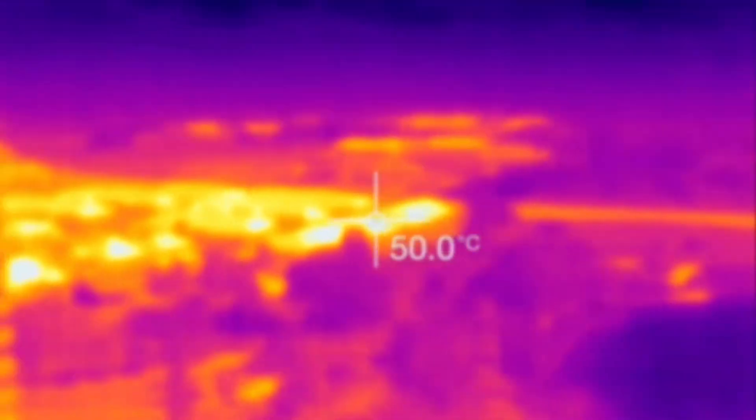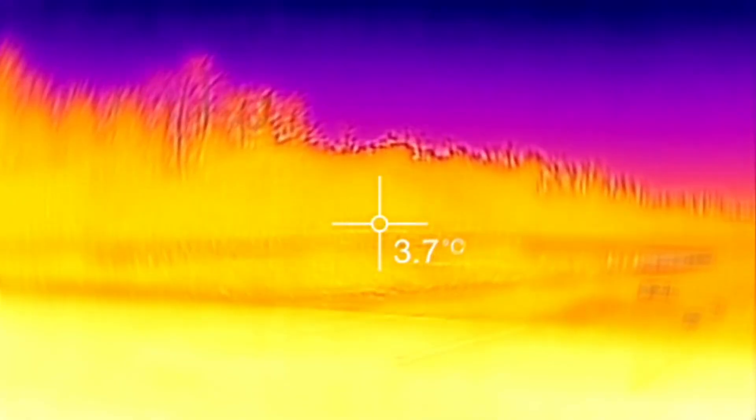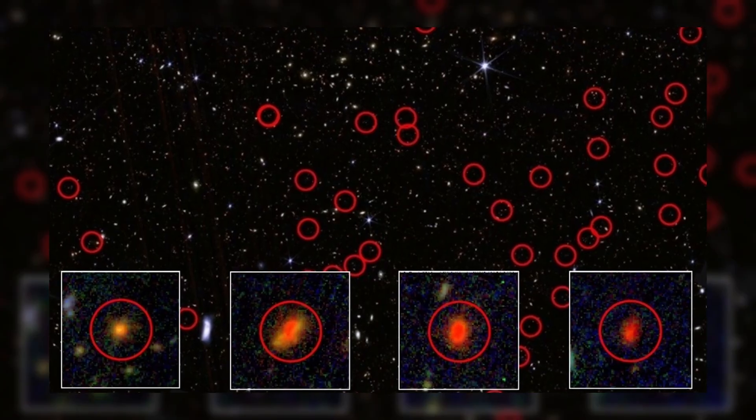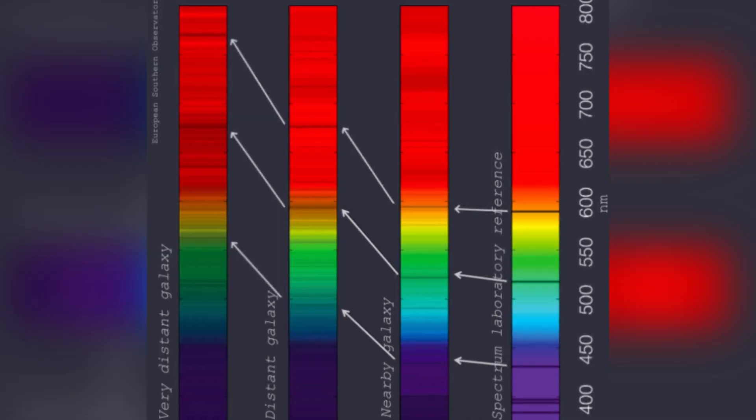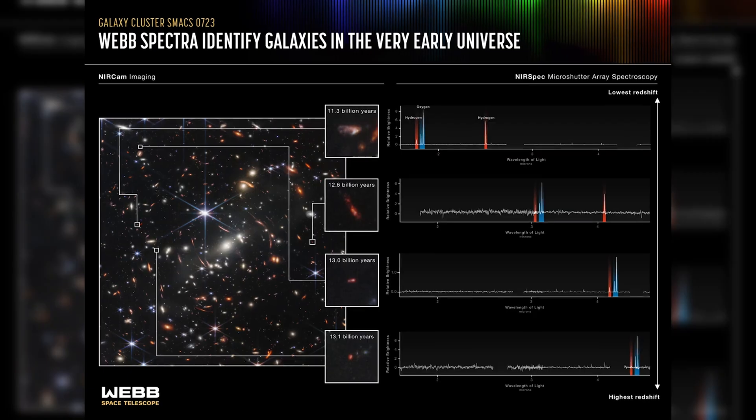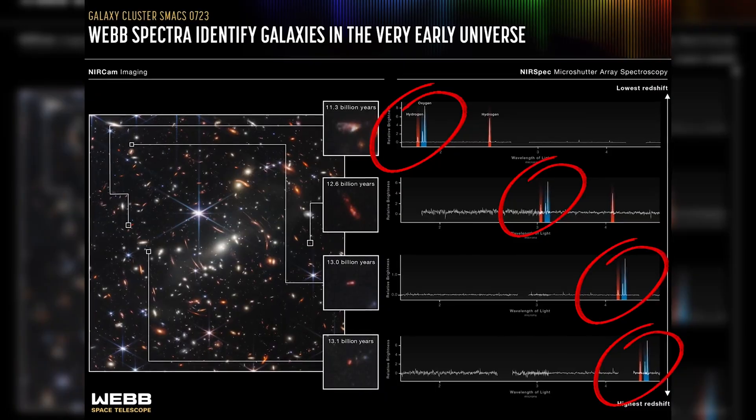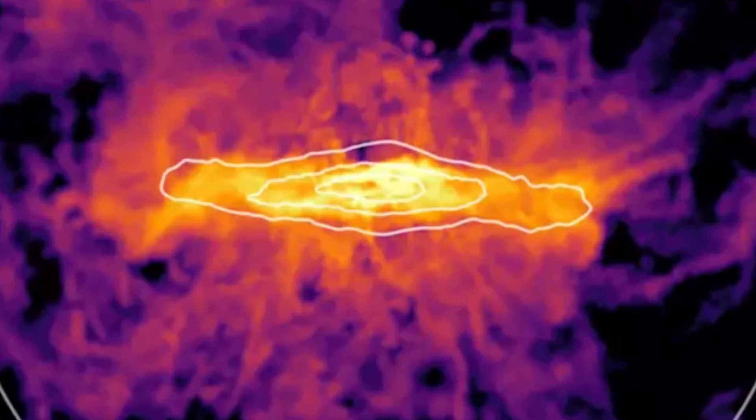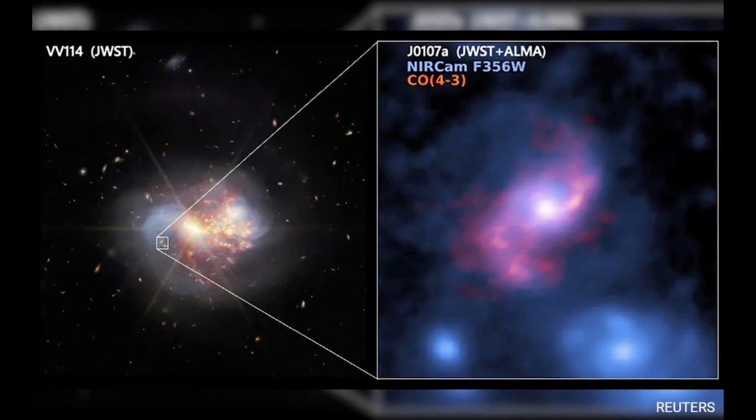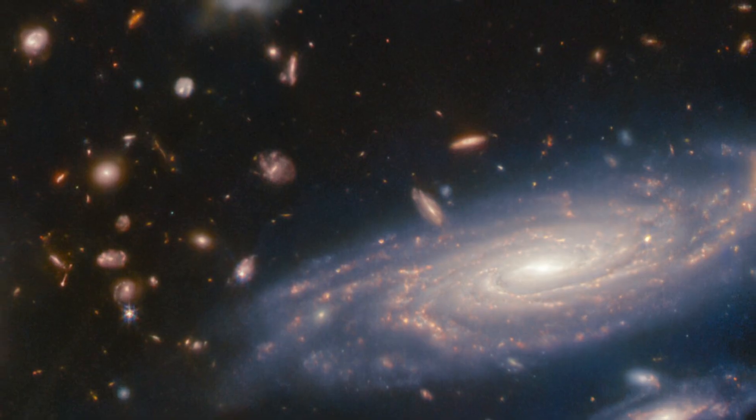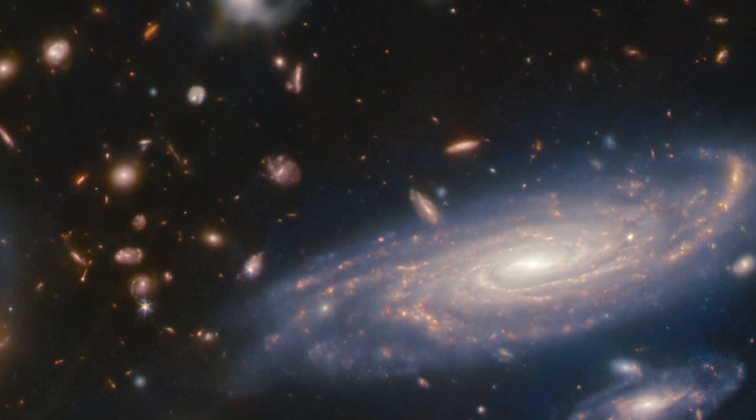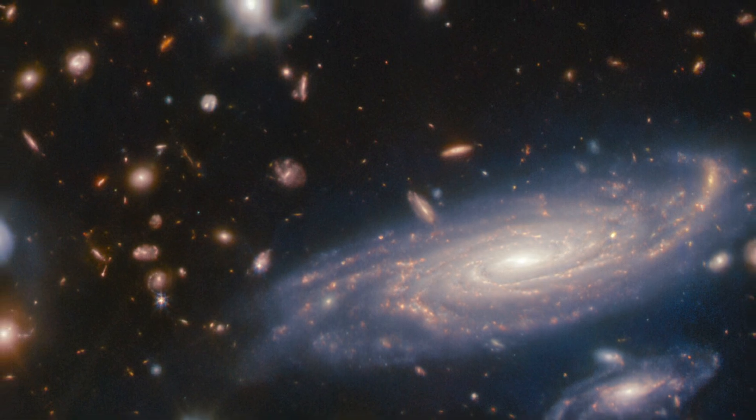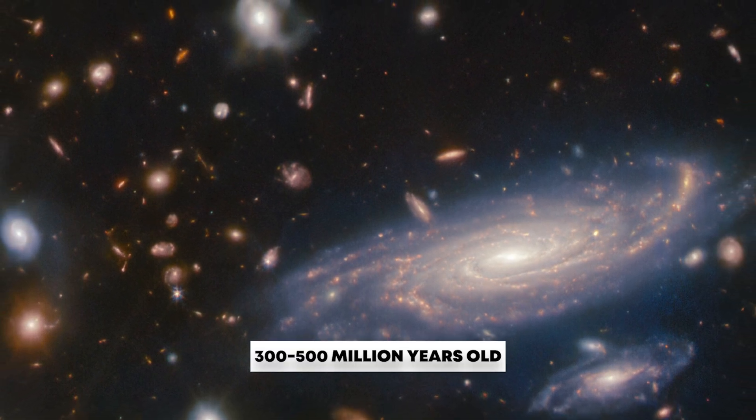When researchers examined the data gathered from Webb's near-infrared camera and near-infrared spectrograph instrument, they discovered that four out of the six galaxies do indeed exhibit extreme redshifts. They reached this conclusion because the spectra from these galaxies lacked the characteristic signature of heavy elements, such as carbon, indicating that Webb is observing them as they appeared when the universe was merely 300 to 500 million years old.